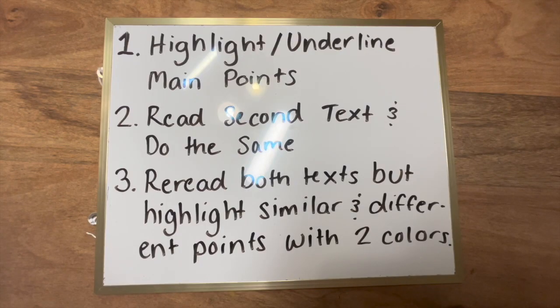Here are a few tips to help us compare and contrast two different articles. One, highlight and underline main points in the text, so anything that might stand out to you. Two, read the second text and do the same, just making sure that you're highlighting the main points in both of the articles, not just one. And the last tip is to reread both of the texts, but highlight similar and different points with two colors.